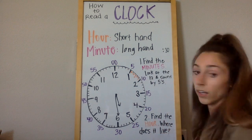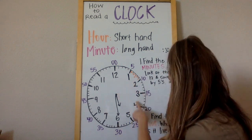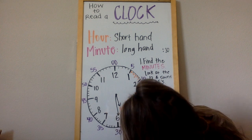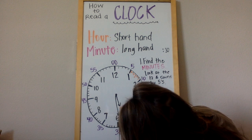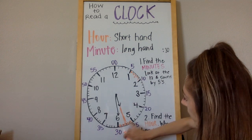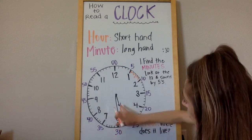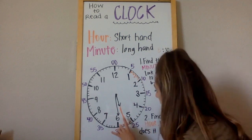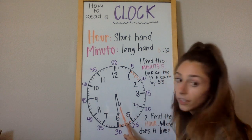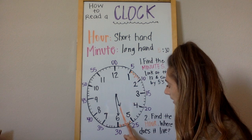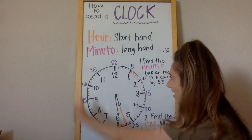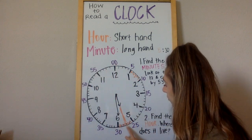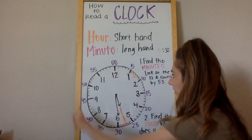Step two: find the hour. My hour hand is right about here, about halfway through the five. So we're still in the hour of five o'clock — we haven't yet reached six o'clock. You want to look at the number that comes before where your hour hand is. So it's 5:30. Notice the hour hand falls right in between the five and the six because our minute hand is halfway around the clock. We've gone 30 minutes and we have 30 more minutes, so our hour hand has slowly moved halfway between the five and the six.